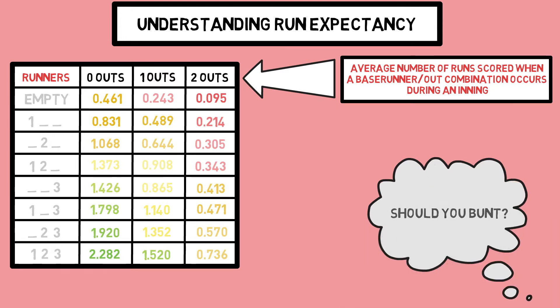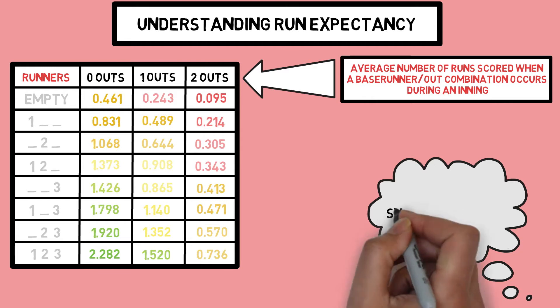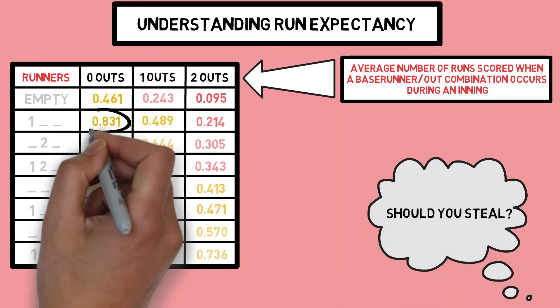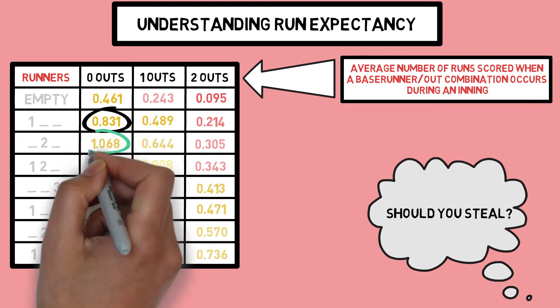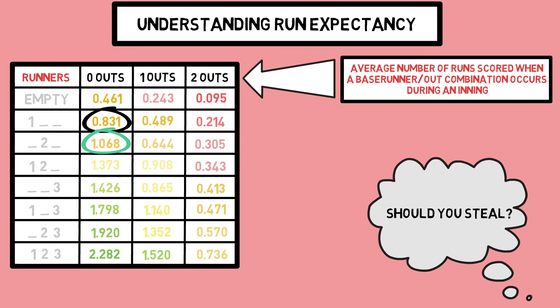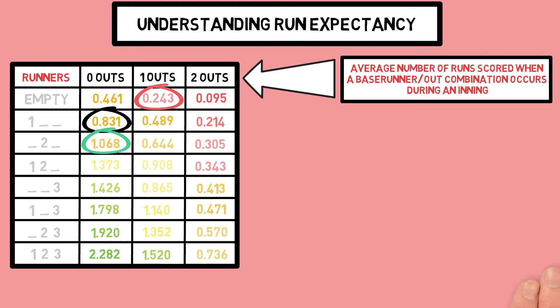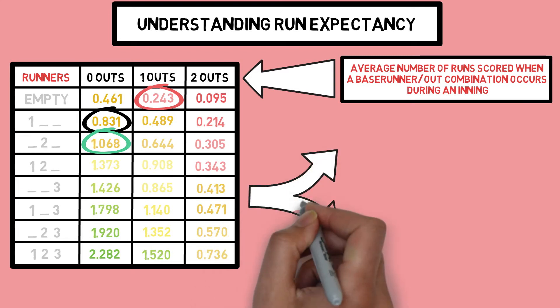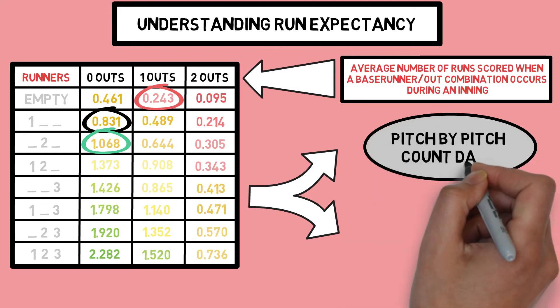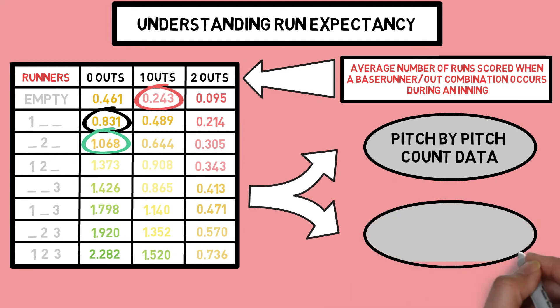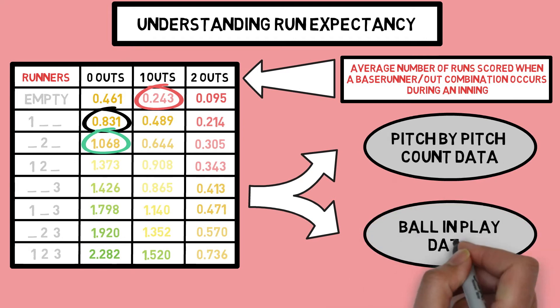Using this chart, you can then apply it to see if you should bunt or if you should steal, both of which I've covered in previous videos. For example, if you have a runner on first with no outs, successfully stealing second would increase the average number of runs scored from .8 to above one. But if you are not successful, you've squashed your chances from .8 to .2. What we are going to be talking about in today's video takes this chart a step further, by breaking down not only outs and base runner situations, but pitch by pitch data as well as batted balls in play data, to quantify how successful individual pitches in a pitcher's repertoire have fared against hitters throughout each season or even his career.